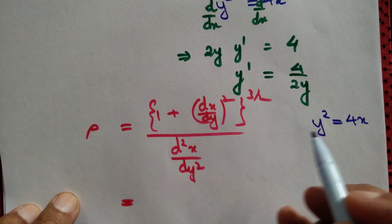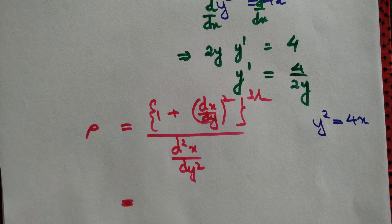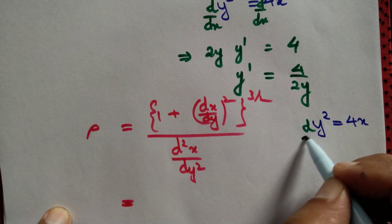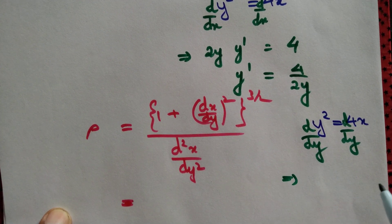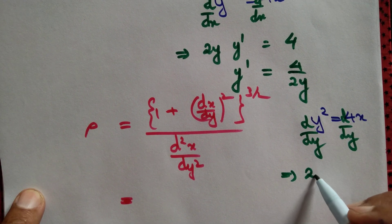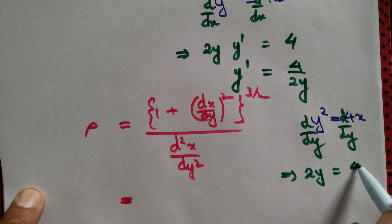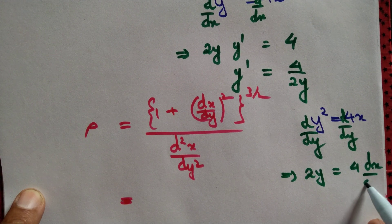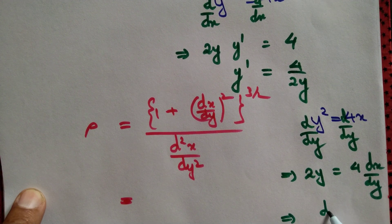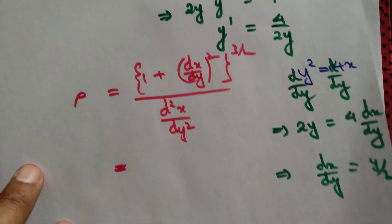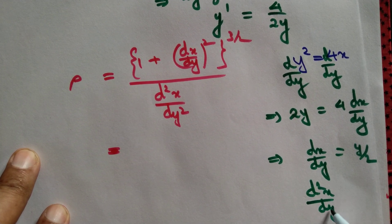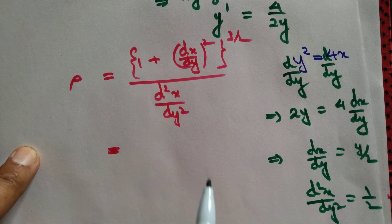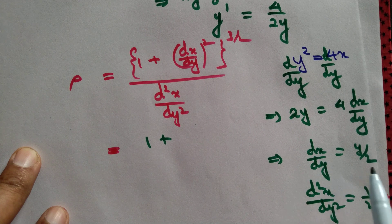Now we want dx/dy, so we differentiate both sides of y² = 4x with respect to y. The derivative of y² with respect to y is 2y, equal to 4·(dx/dy), giving us dx/dy = y/2. Differentiating again, d²x/dy² = 1/2.